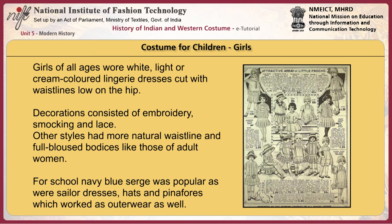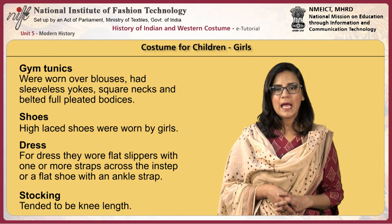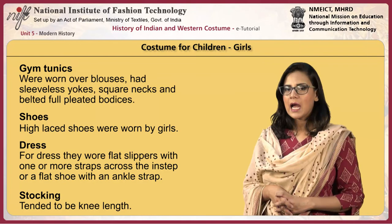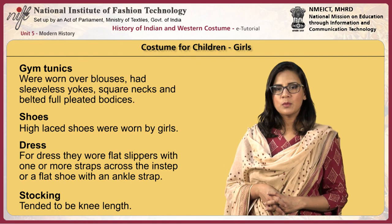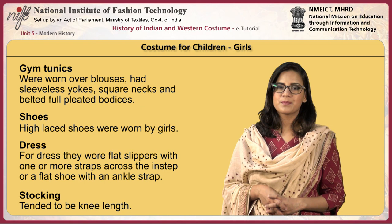Girls of all ages wore white, light, or cream-coloured lingerie dresses cut with waistlines low on the hip. Decorations consisted of embroidery, smocking, and lace. Other styles had more natural waistlines and full-bloused bodices like those of adult women. For school, navy blue serge was popular, as were sailor dresses, hats, and pinafores which worked as outerwear as well. Skirts were knee-length and longer. Gym tunics worn over blouses had sleeveless yokes, square necks, and belted full-pleated bodices. High-laced shoes were worn by girls. For dresses, they wore flat slippers with one or more straps across the instep, or a flat shoe with an ankle strap. Stockings tended to be knee-high.